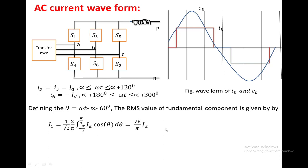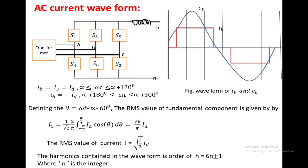The RMS value of the phase current from this waveform is I equal to root(2/3) times Id. From Fourier analysis, this current contains harmonics of order 6n plus or minus 1: for n equal to 1 we get the 5th and 7th harmonics; for n equal to 2 we get the 11th and 13th harmonics, and so on. These harmonics flow through the transformer.